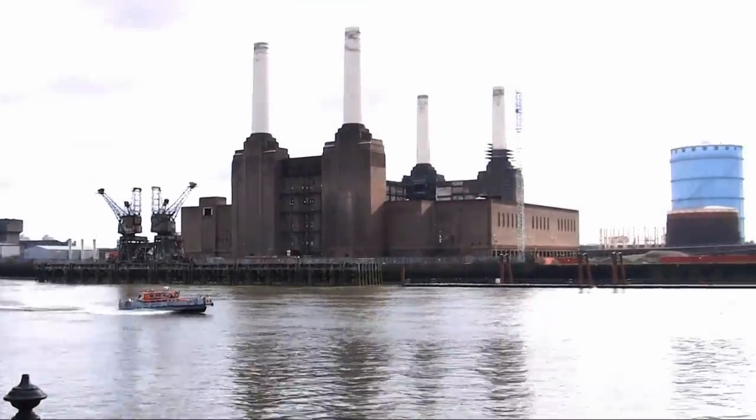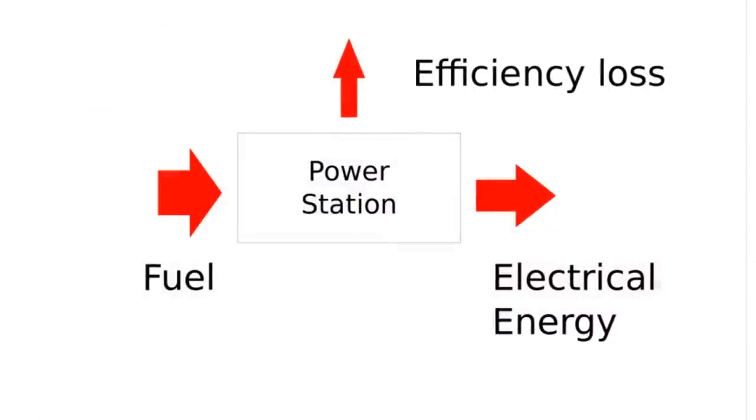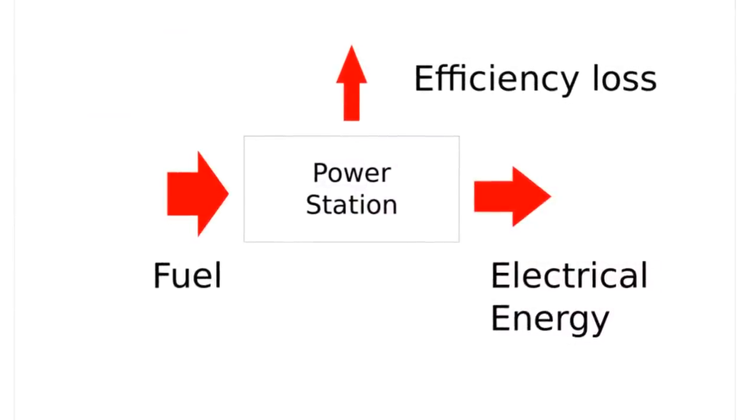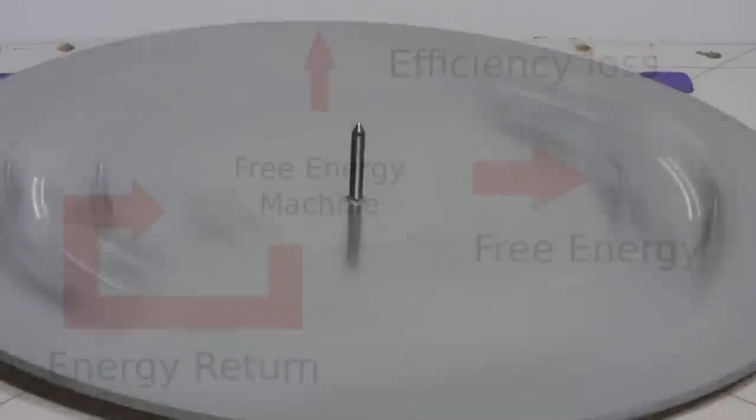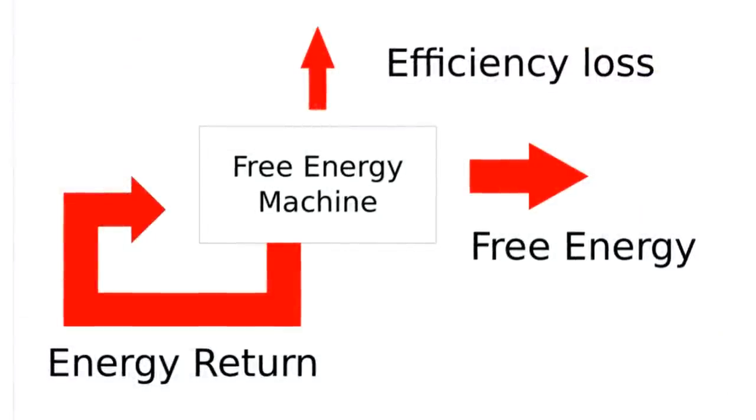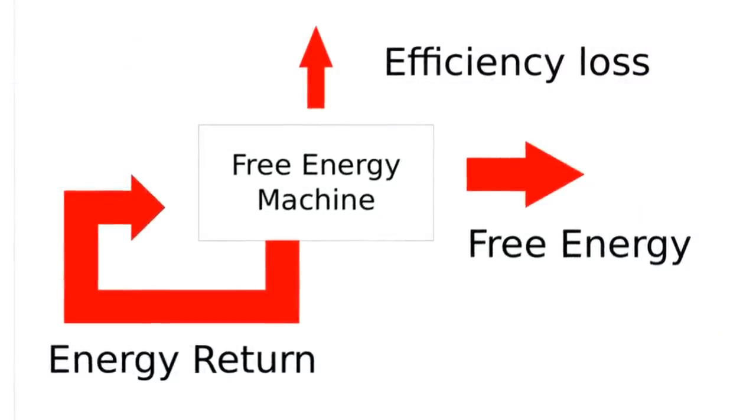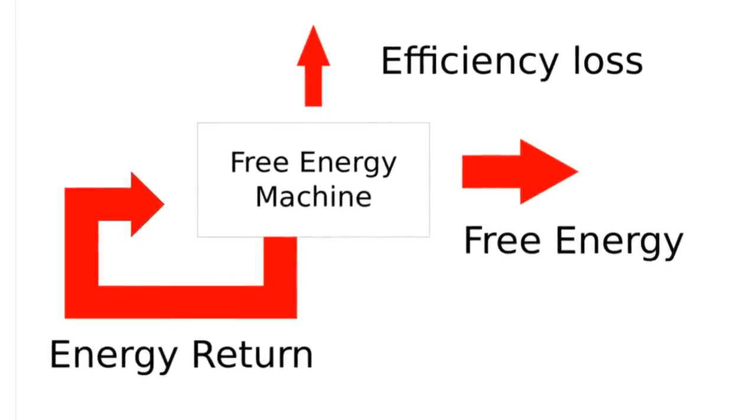In conventional power generating plants, energy is inefficiently converted from one form to another. In a free energy system, more energy is generated than is used. By partially closing the loop, we can create a perpetual machine that generates free energy.